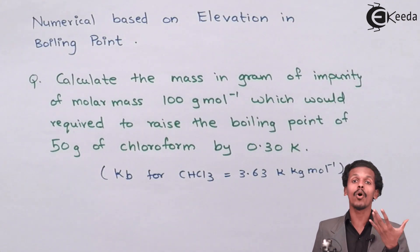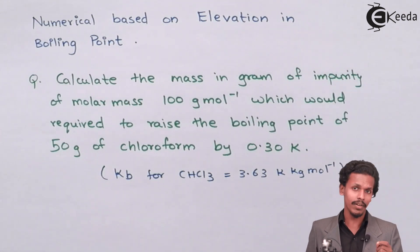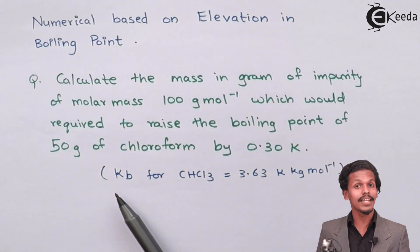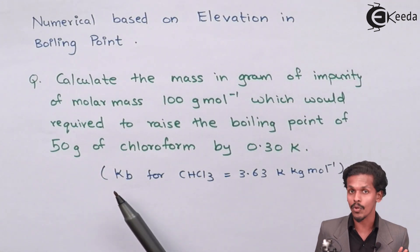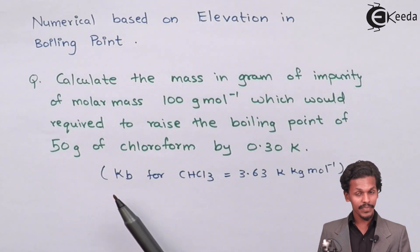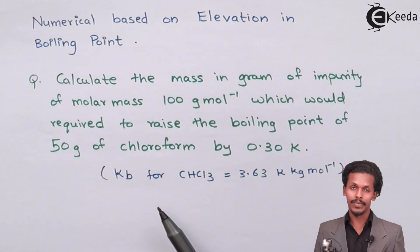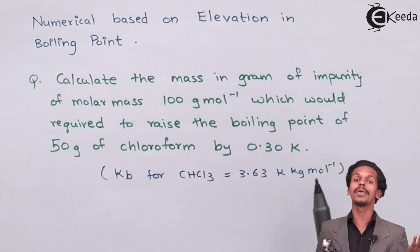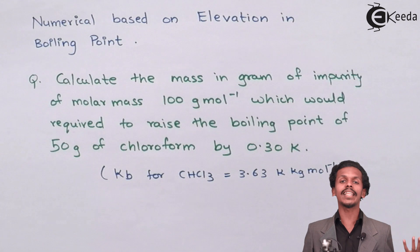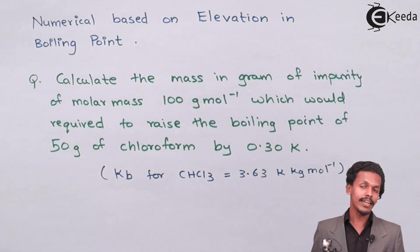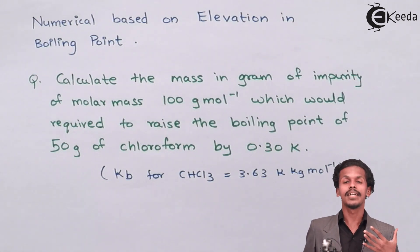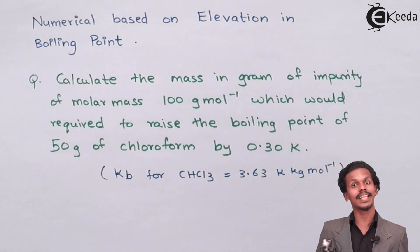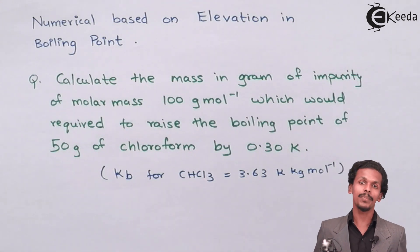But before that we have to add small data which is very essential, which is elevation in boiling point's ebullioscopic constant Kb. The Kb value for chloroform is given as 3.63 Kelvin kg per mole. So with all this data, let us write it and determine the amount of impurity we should add in the pure solvent.